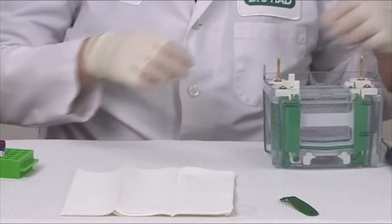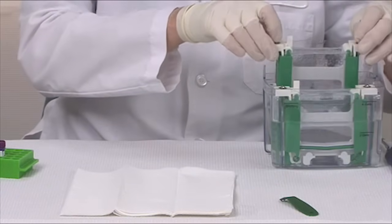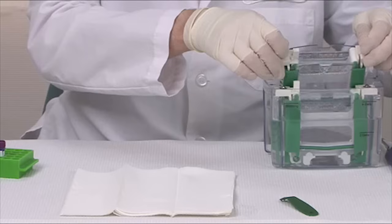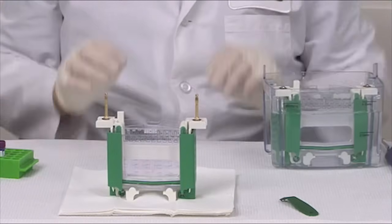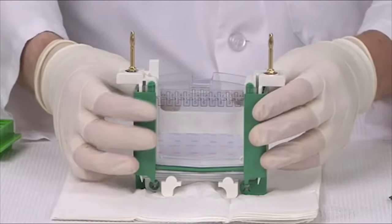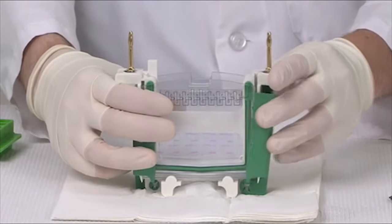Pour the buffer out of the core so that you can unload the gels. Now you are ready to remove the gels from the core assembly. Open each wing clamp of the core and remove the gels.